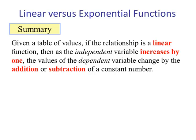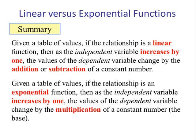Summary. Given a table of values, if the relationship is a linear function, then as the independent variable increases by 1, the values of the dependent variable change by the addition or subtraction of a constant number. If the relationship is an exponential function, then as the independent variable increases by 1, the values of the dependent variable change by multiplication of a constant number called the base. With exponential functions, the dependent variable increases or decreases very quickly due to this constant multiplication. Thanks for watching.